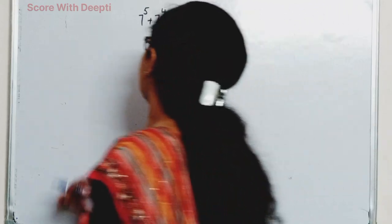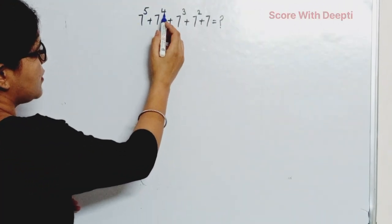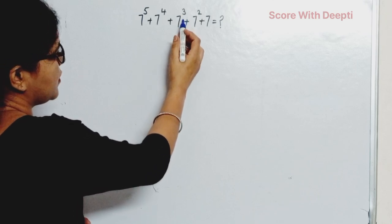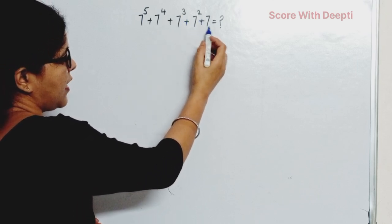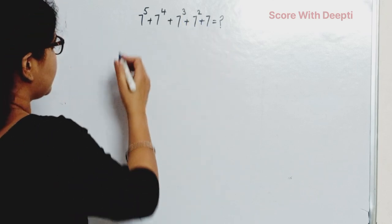Let's start. The problem is 7^5 + 7^4 + 7^3 + 7^2 + 7 = ? Let's start solution.